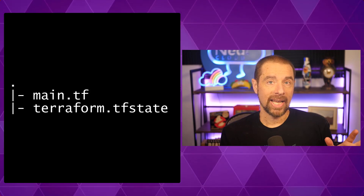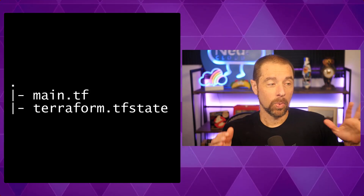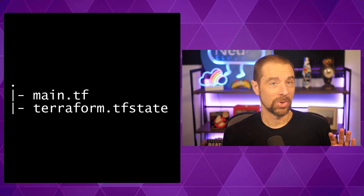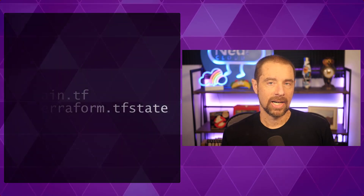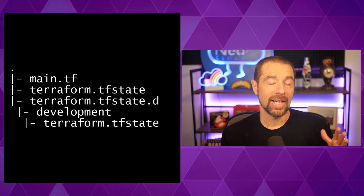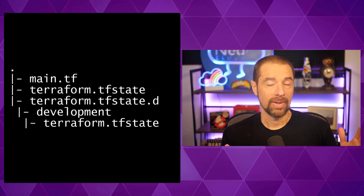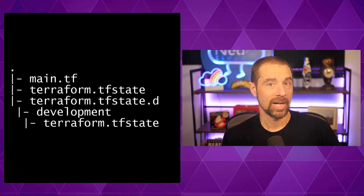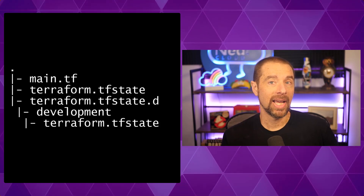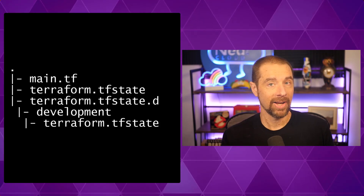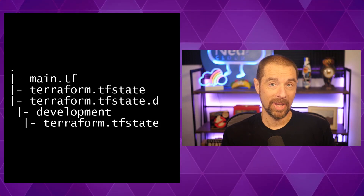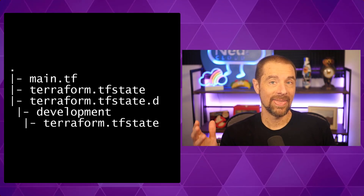For the local backend, it creates a file called terraform.tfstate in the working directory for the default workspace. There's always a default workspace — it's the workspace that exists before you create any other workspaces — and that will have the terraform.tfstate file. If you're using the local backend and you create an additional workspace, Terraform creates a directory called terraform.tfstate.d in the working directory, and each workspace gets its own subdirectory containing a terraform.tfstate file. That's how Terraform figures out which workspaces exist — it looks at the subdirectories inside terraform.tfstate.d.